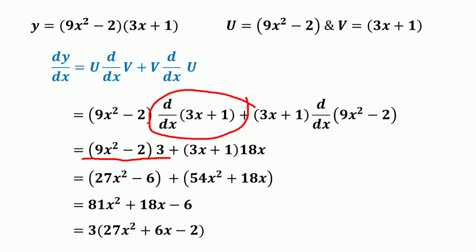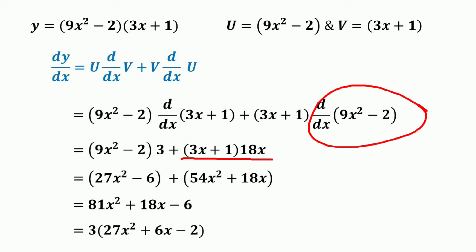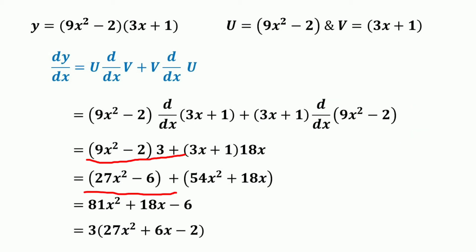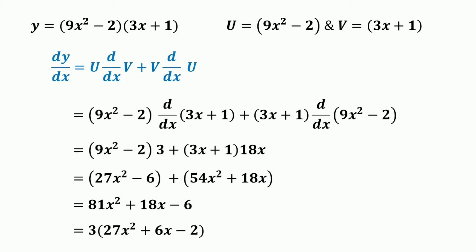The derivative of (3x + 1) is 3, and the derivative of (9x squared minus 2) is 18x. So we get (9x squared minus 2) times 3, plus (3x + 1) times 18x. Expanding: 27x squared minus 6, plus 54x squared plus 18x. Combining like terms: 27x squared plus 54x squared equals 81x squared, plus 18x minus 6.